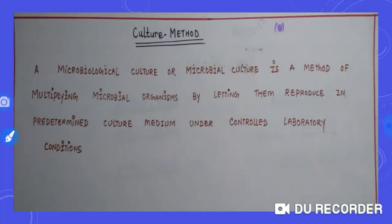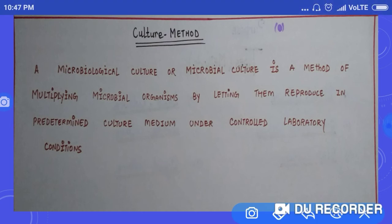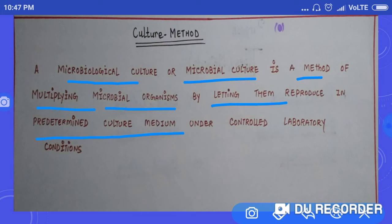Starting with the definition: what is culture method? It is also called microbiological culture or microbial culture. This is the method used for cultivation of microbial agents. It is a method of multiplying or cultivating microorganisms by taking certain specimens. We are able to cultivate microbial organisms by these methods, letting them reproduce in predetermined culture media.